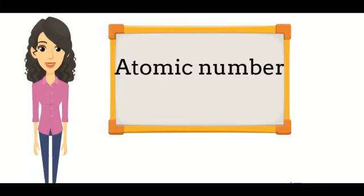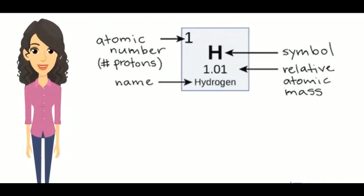Atomic number is the number of protons in the nucleus. It defines the chemical nature of the atom. For example, hydrogen has atomic number 1.